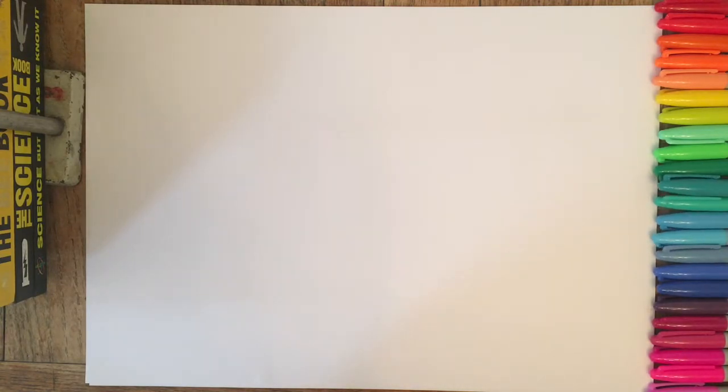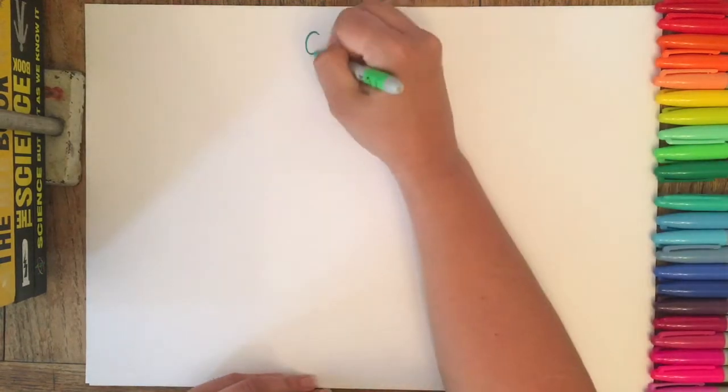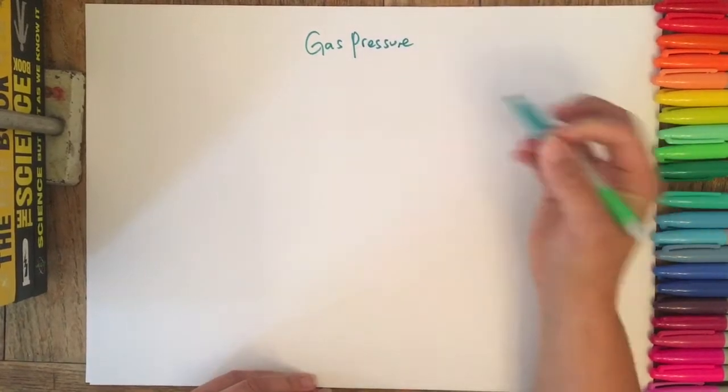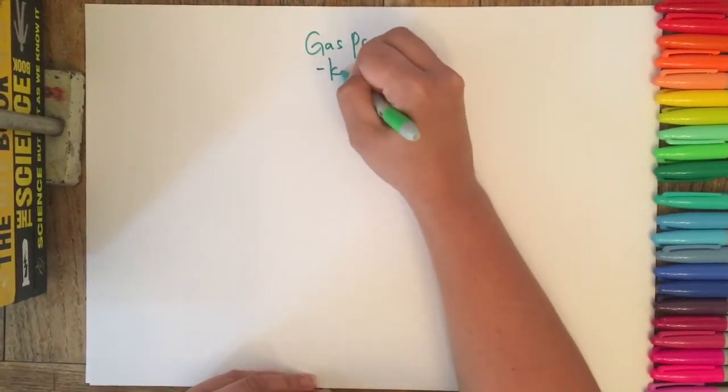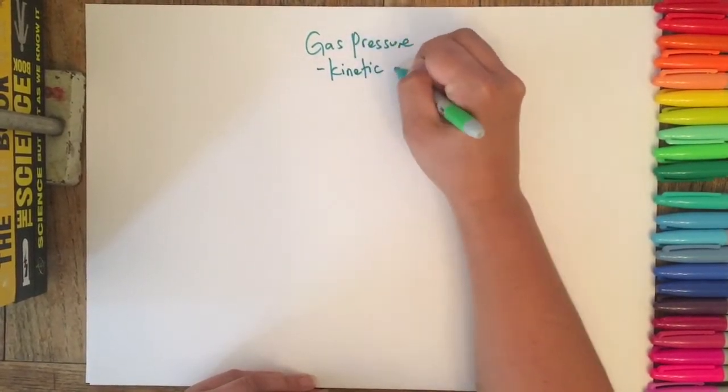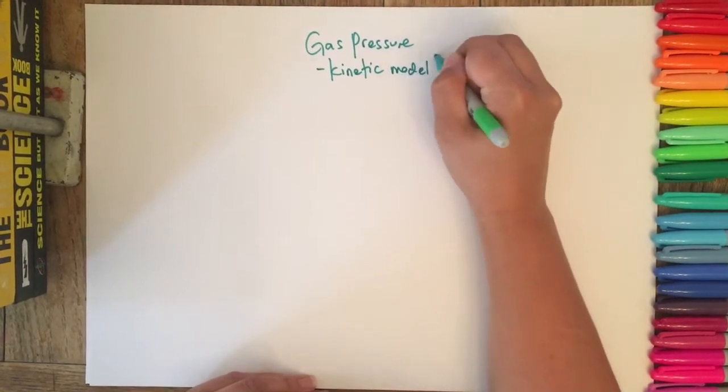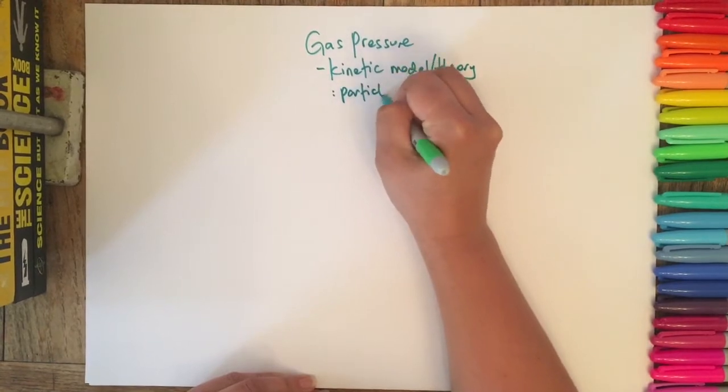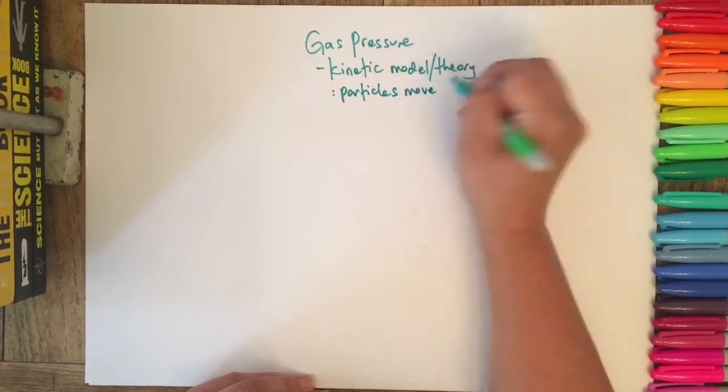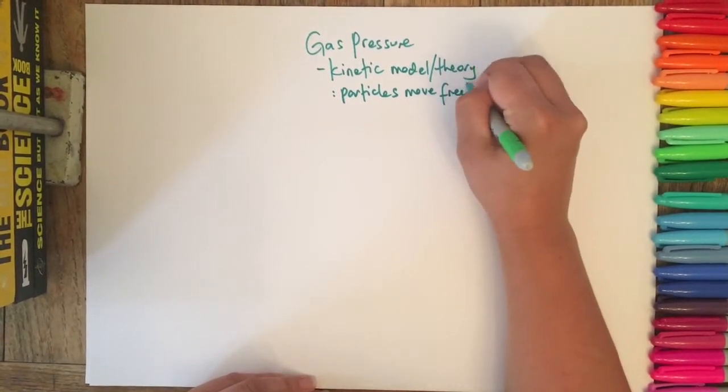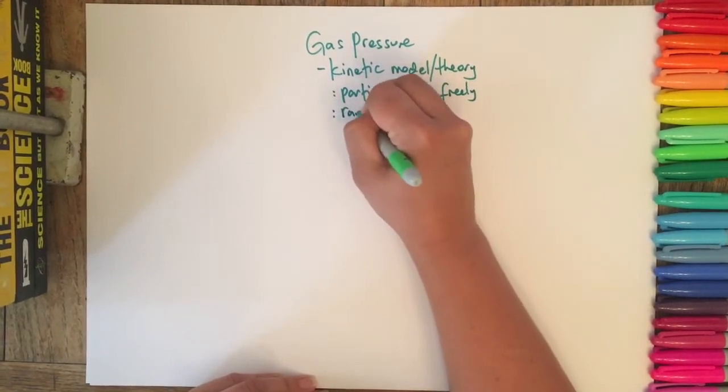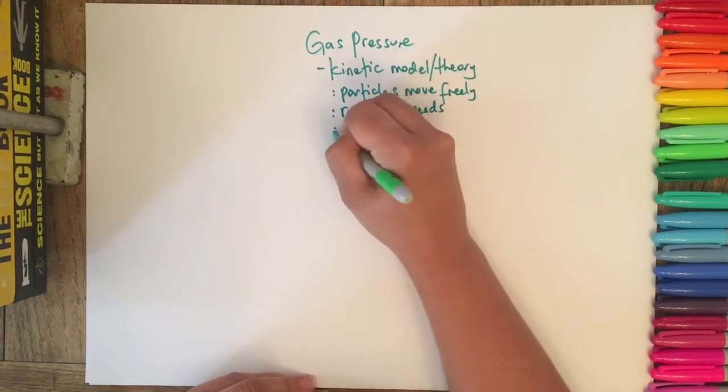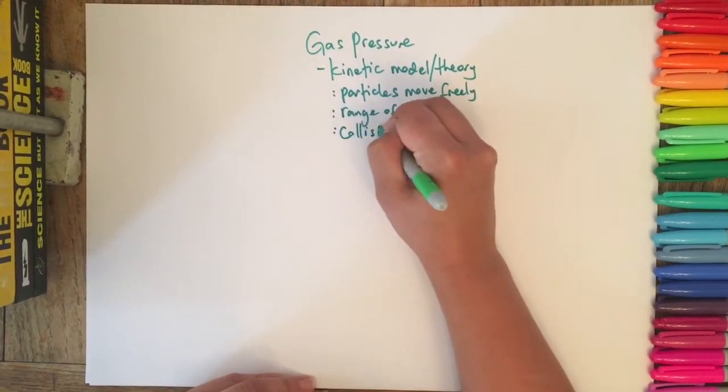First of all, I want us to think about what we actually mean by gas pressure, and this is mostly explained by the kinetic model or kinetic theory. This is the idea that we have particles that move freely in a gas, it's mostly empty space, that they have a range of speeds, and that there are collisions.